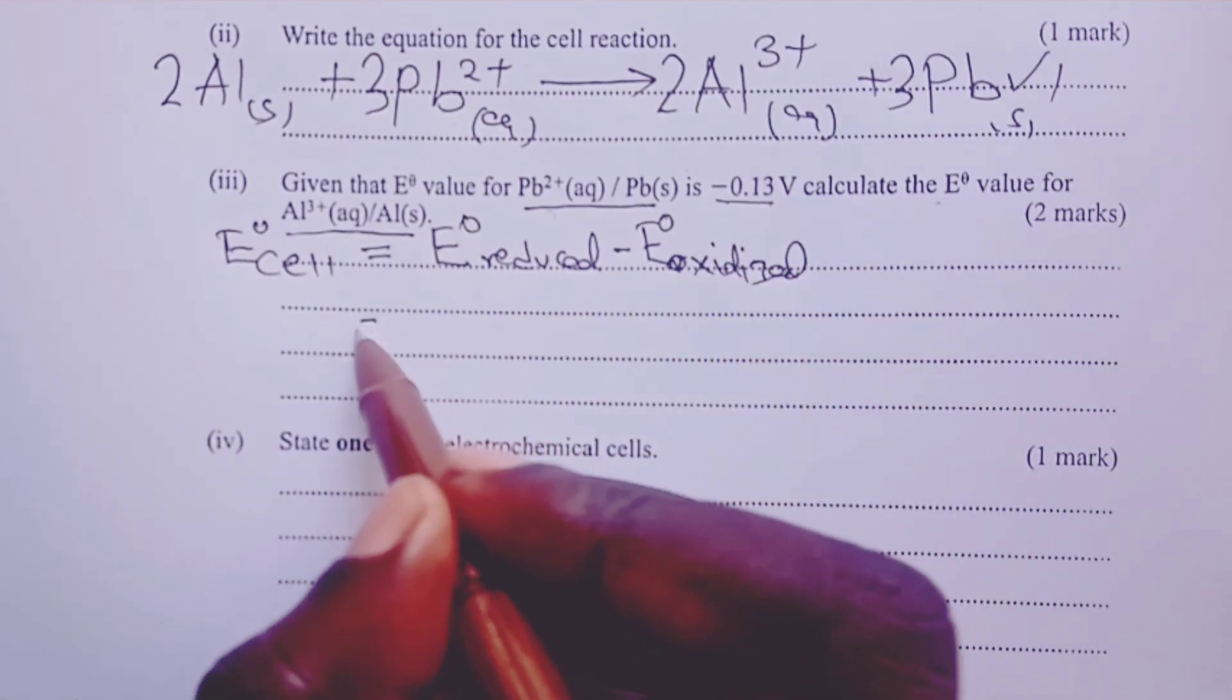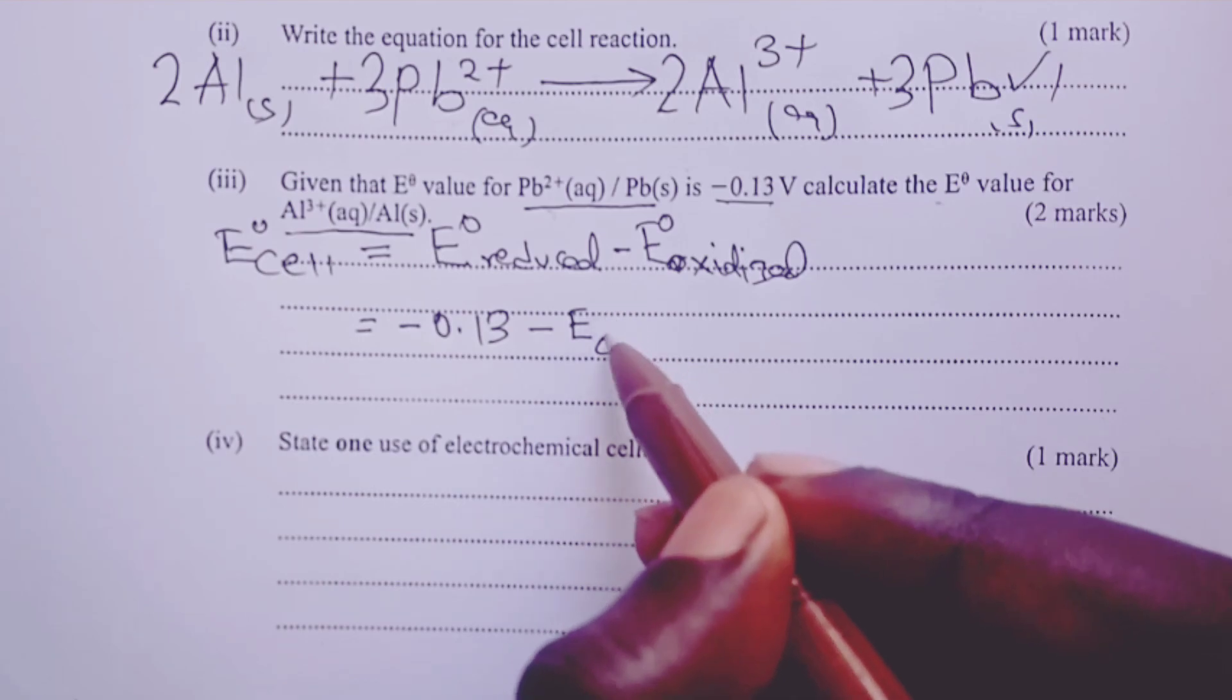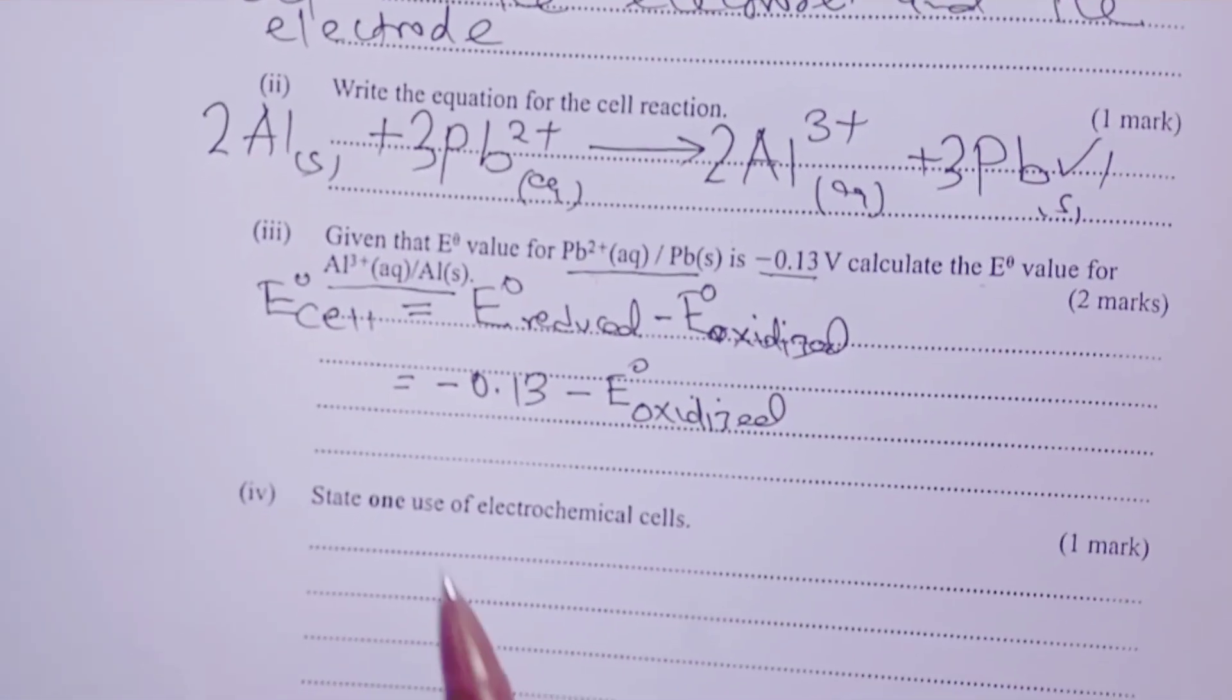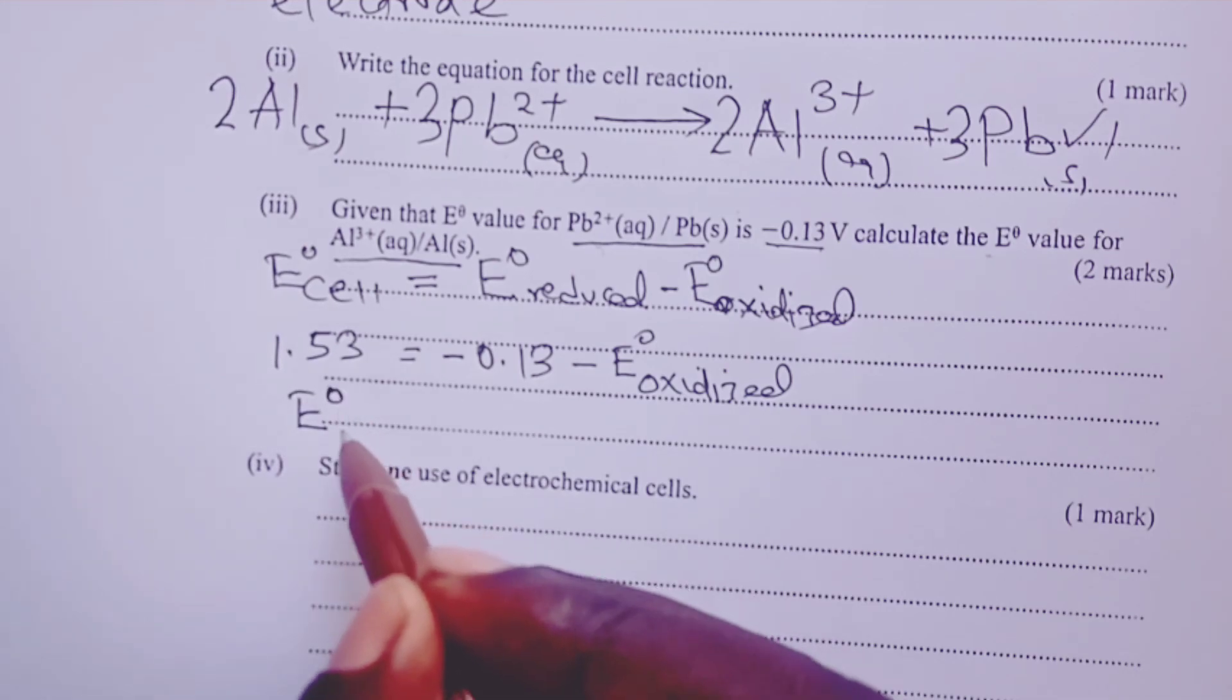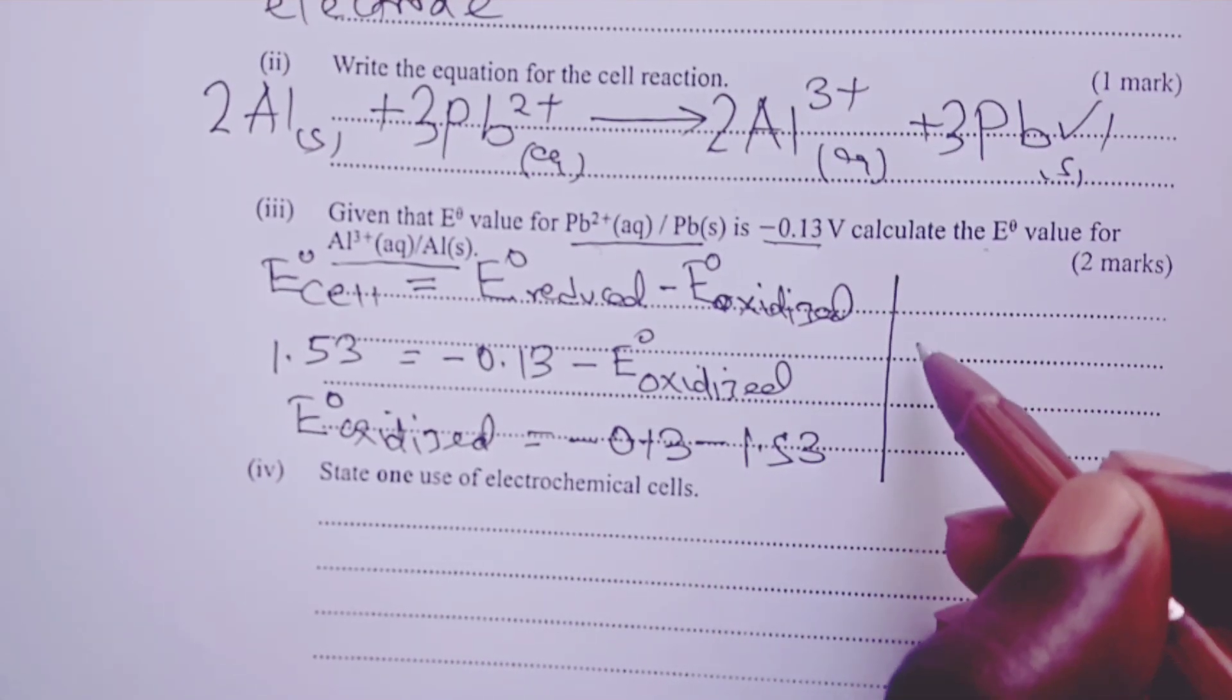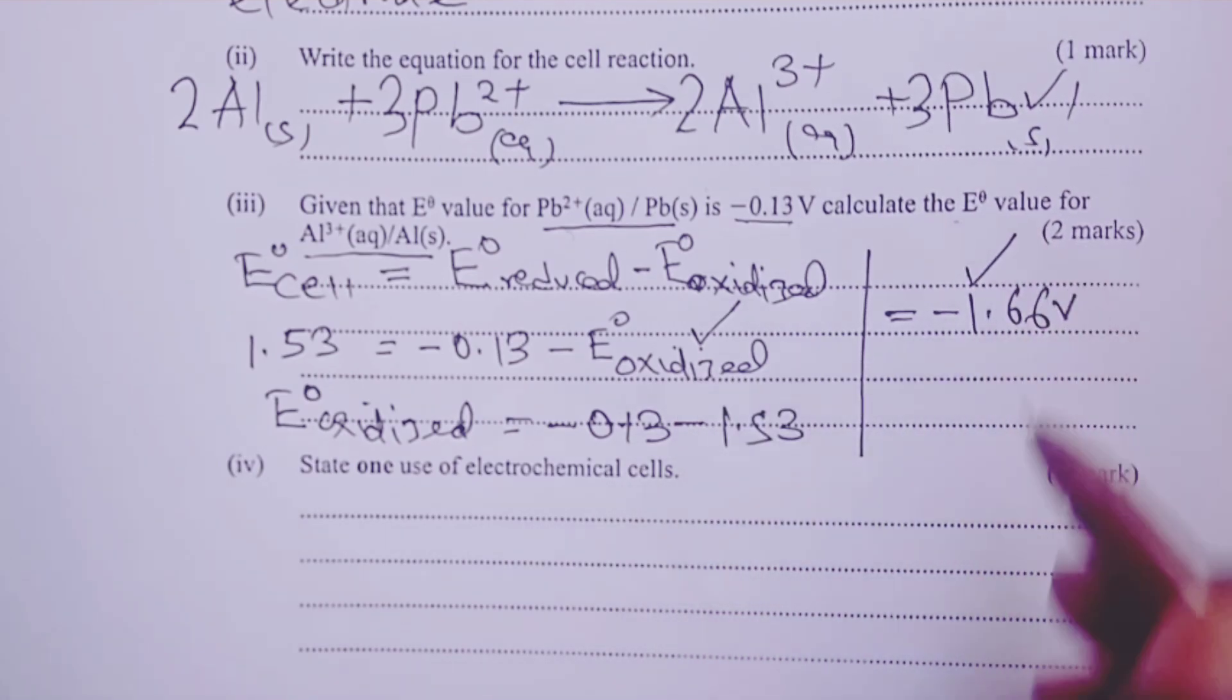So once we know this relation, we shall then put in our values. The reduced is lead, and it has been given as negative 0.13, and the oxidized is what we are looking for. So we shall look for the E° of the oxidized species, and of course the E cell has been given up here as positive 1.53 volts. So that is what we have here, and with these, we can then go ahead and get the E° of the oxidized species as negative 0.13 minus 1.53, and that gives us a figure of negative 1.66 volts. It is two marks, so we shall give one whole mark for that relation, and one mark for the answer.